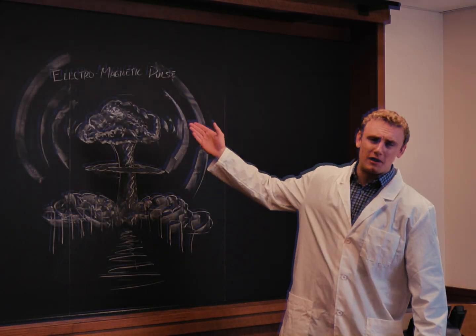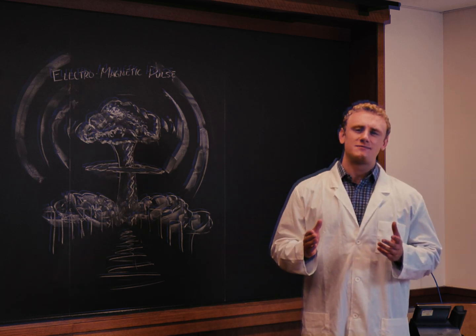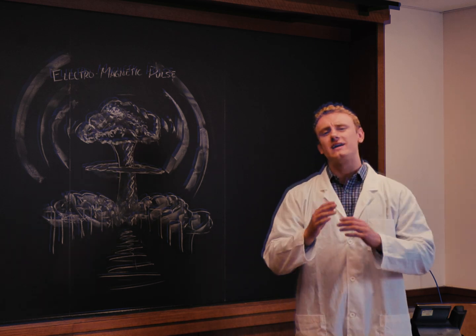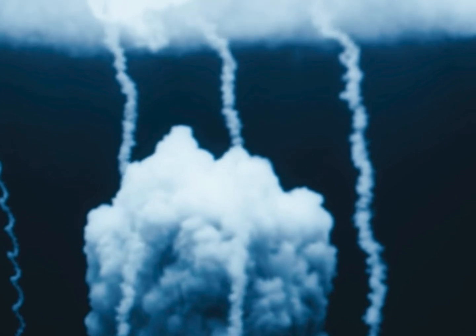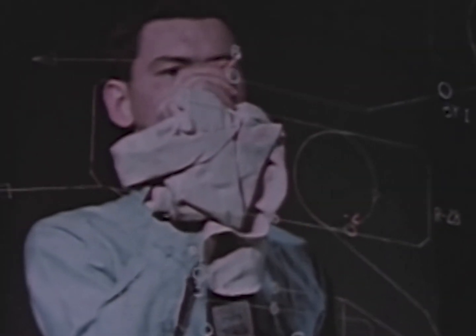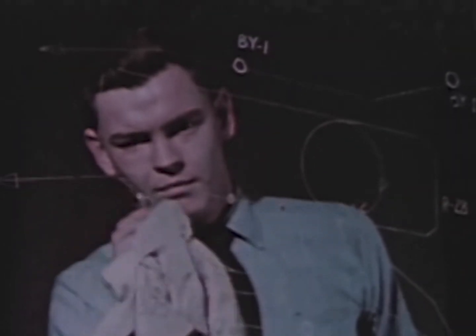An electromagnetic pulse, or EMP, is a phenomenon that cripples electronic systems by inducing an overwhelming electric current. It was discovered during the nuclear testing of the 1950s. Hydrogen bombs detonated in the Pacific interfered with communication in Australia and short-circuited streetlights in Hawaii, more than 800 miles away. It was determined that nuclear explosions generated electromagnetic pulses which could influence technology far outside the blast radius.